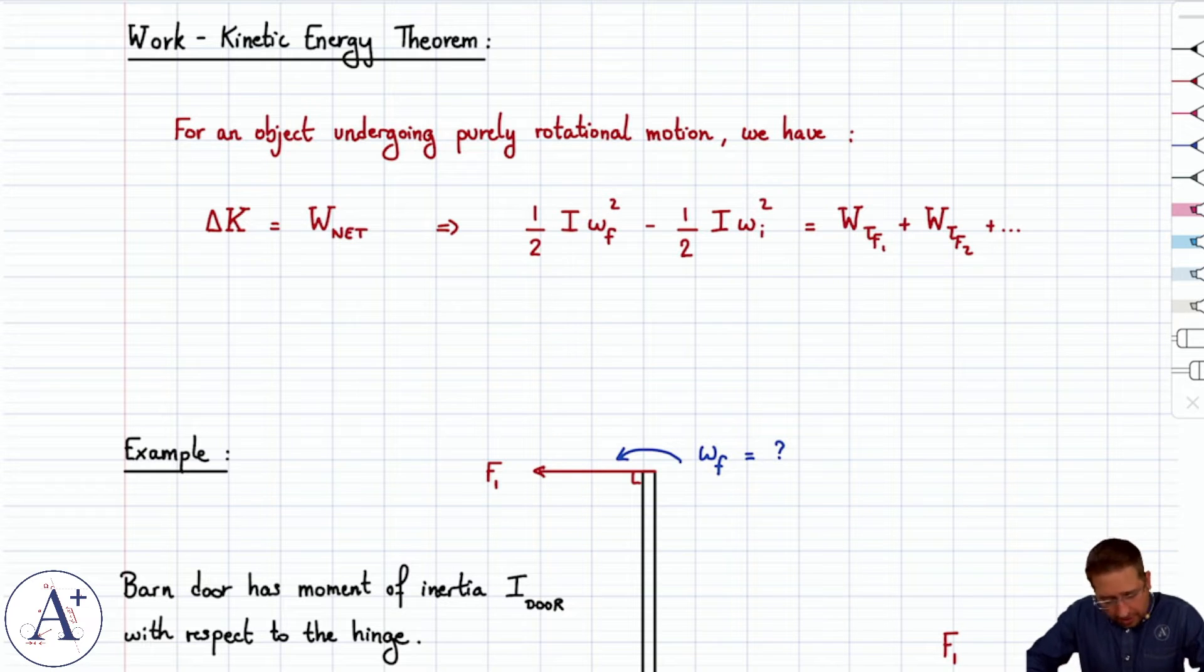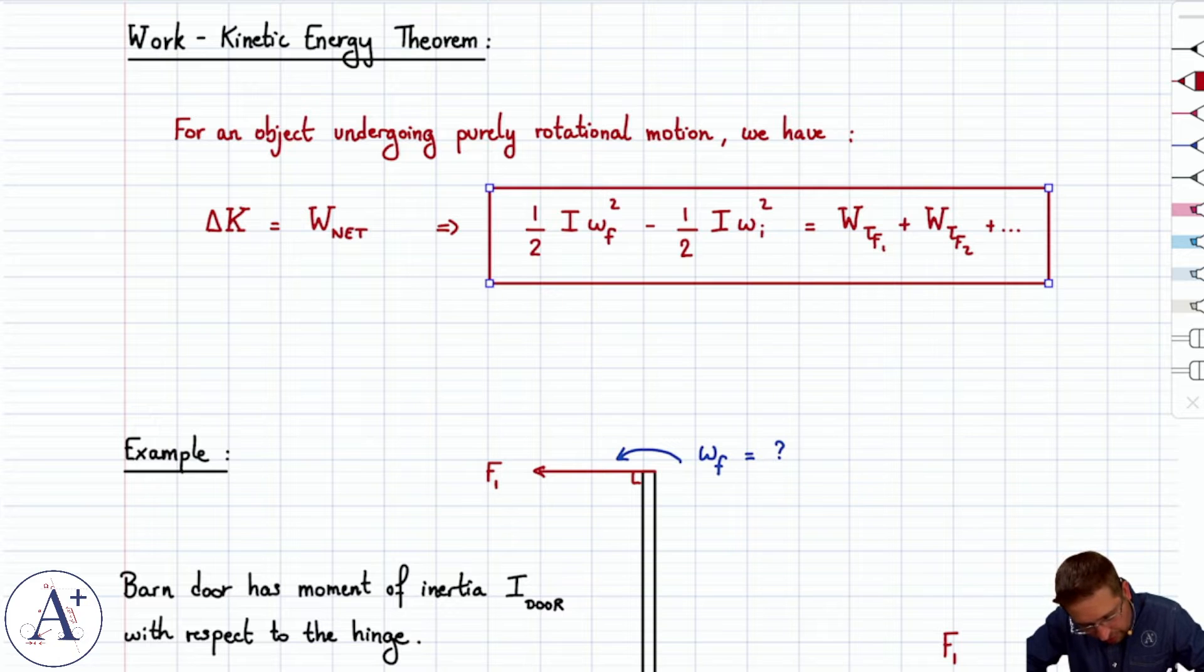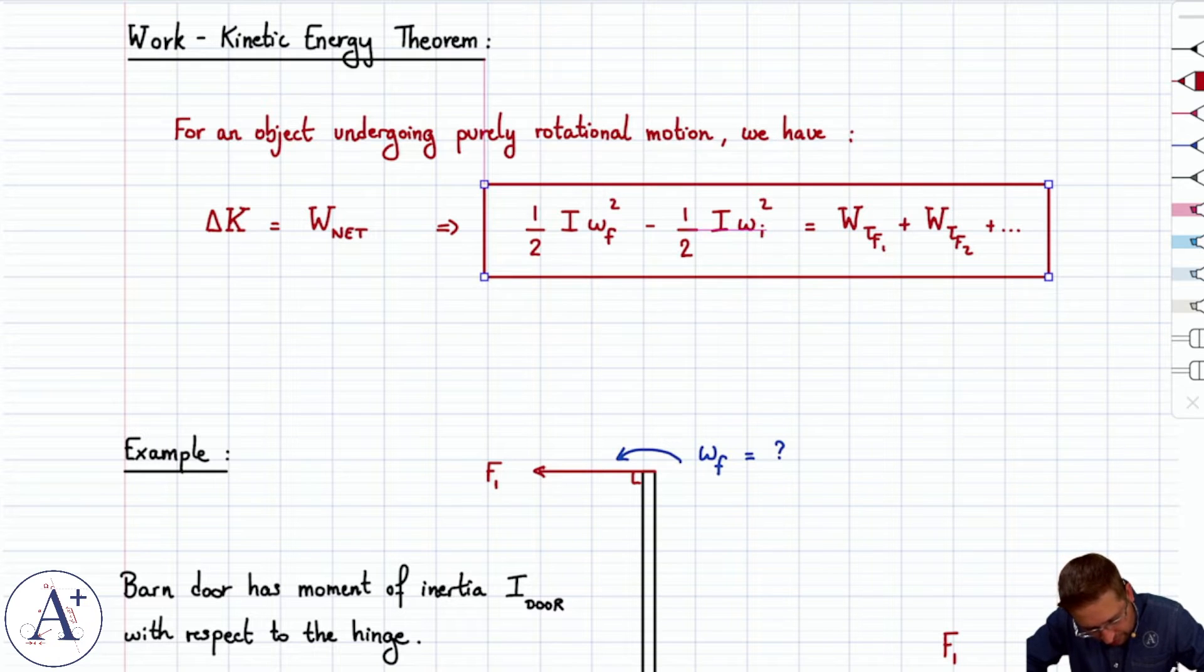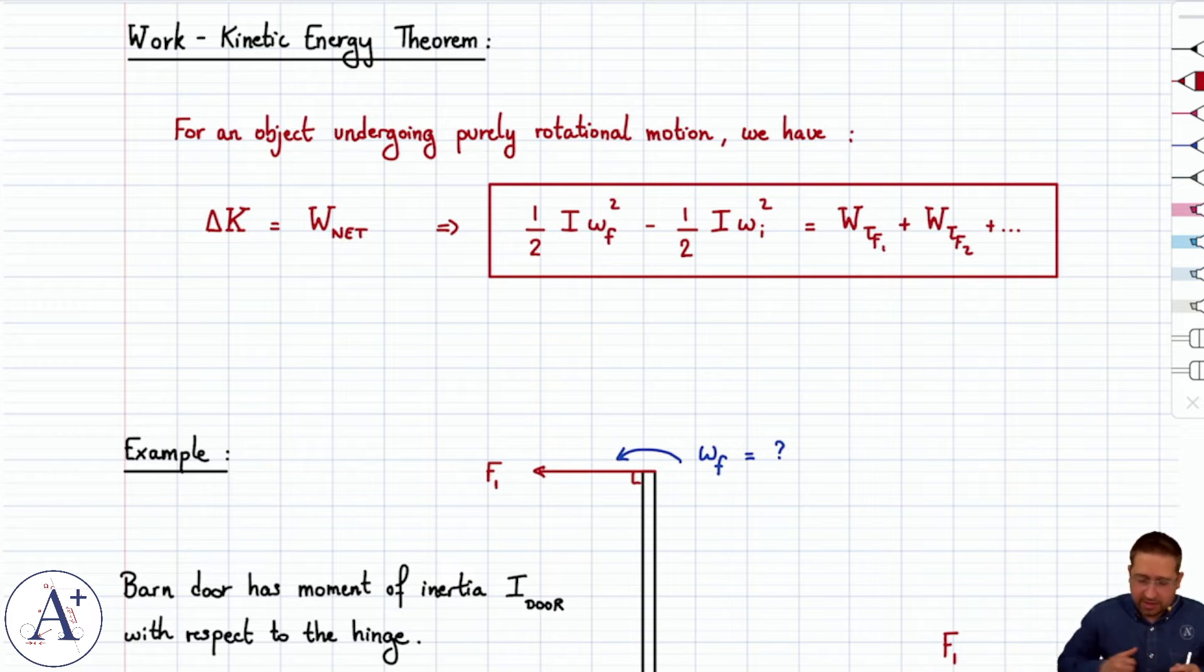You still write delta K equals work net in the condensed form, but with the understanding that you're applying it to rotational motion. Delta K is going to be one-half I omega final squared minus one-half I omega initial squared, and work net is going to be work of torque due to F1 plus work of torque due to F2, and so forth.